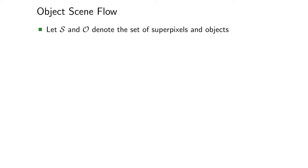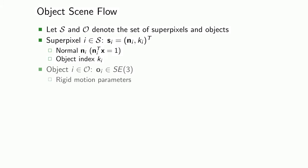We pose scene flow estimation as inference in a conditional random field. We first partition the image into superpixels, and associate each superpixel with a plane variable n, describing its 3D geometry, as well as an object index k. A second set of variables captures the rigid motion parameters of all objects.